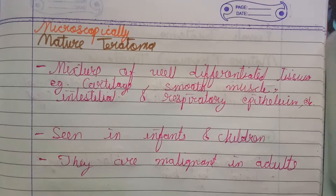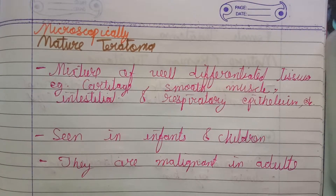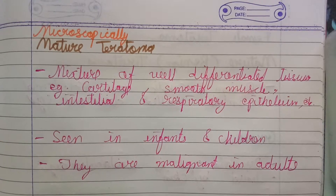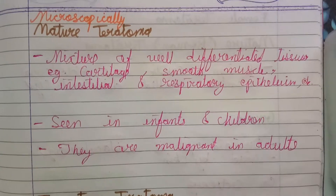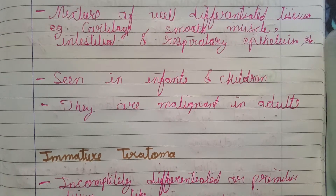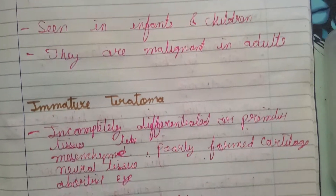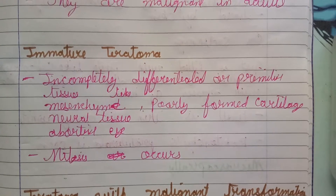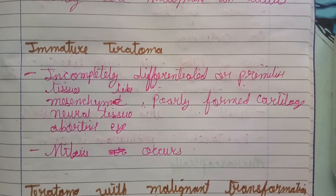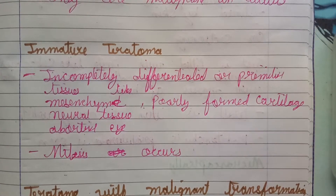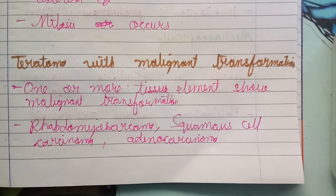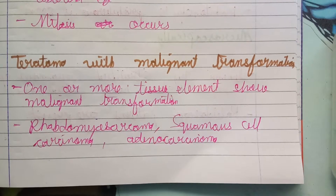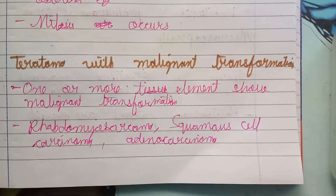Microscopically, in mature teratoma there is a mixture of well-differentiated tissue — for example, cartilage, smooth muscle, intestinal and respiratory epithelium. These are benign in infants but malignant in adults. In immature teratoma, there is incompletely differentiated or primitive tissue like mesenchymal and poorly formed cartilage; abortive mitosis also occurs. In teratoma with malignant transformation, one or more tissue elements show malignant transformation — rhabdomyosarcoma, chondrosarcoma, and adenocarcinoma are examples.